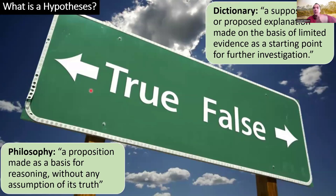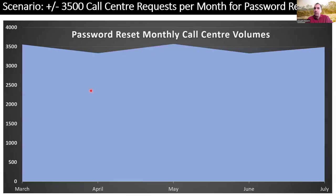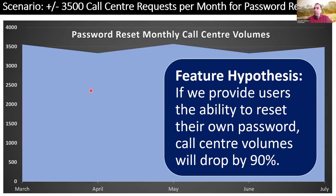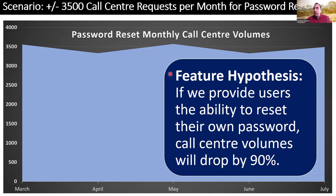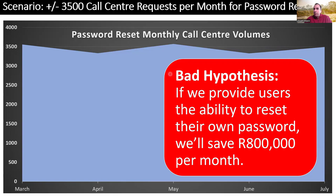We use a hypothesis to test something and get fast feedback. For password reset, a good feature hypothesis would be: 'If we provide users the ability to reset their own password, call centre volumes will drop by 90%.' Why is that a good hypothesis? Because we can test it very quickly. Once you go into production, you can very quickly see what's happening to call centre volumes — are we seeing a 90% drop? We get fast feedback on that.